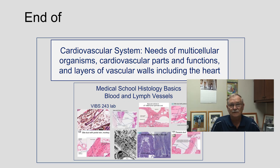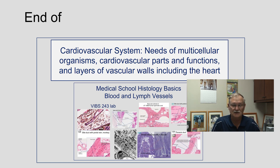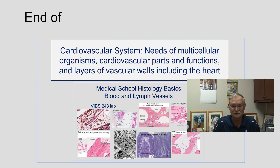This is the end of the cardiovascular system presentation covering the needs of multicellular animals, the cardiovascular parts and their functions, and the layers of the vascular wall — what's in the wall including the heart.